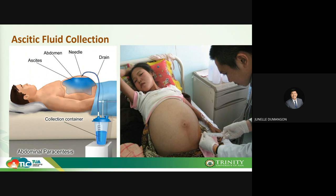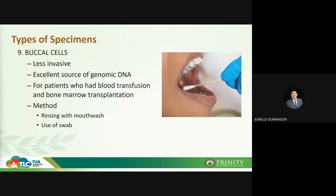Buccal cells, found in our mouth, are an excellent source of genomic DNA because collection is minimally invasive — you simply use a sterile swab inside the mouth. They are used for patients who cannot undergo blood transfusion or bone marrow collection. Before collecting, the mouth should be rinsed with mouthwash and a sterile swab must be used.